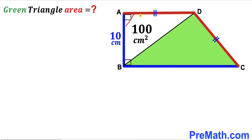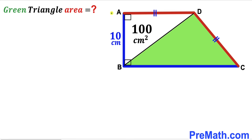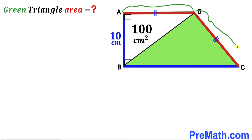Welcome to Pre-Math. In this video we have trapezoid ABCD that consists of two triangles: the white right triangle ABD and the green shaded triangle BCD. Side AB has length 10 centimeters, the area of the white triangle is 100 centimeters square, side AD equals side CD, and these angles are 90-degree angles. Our task is to calculate the area of the green shaded triangle BCD.